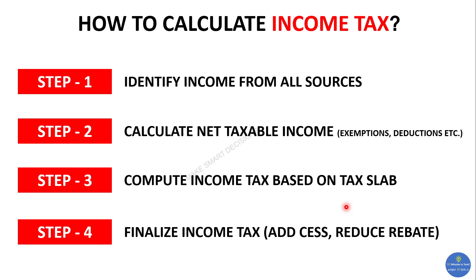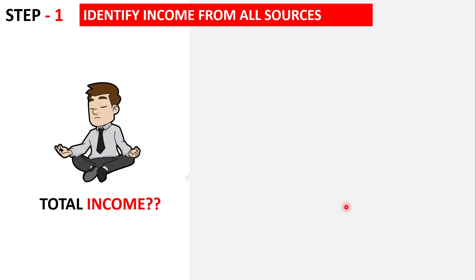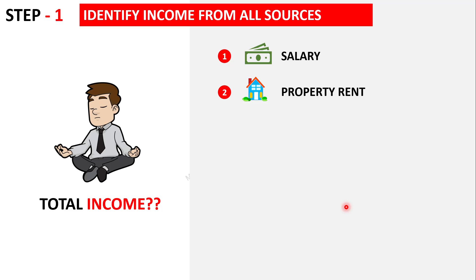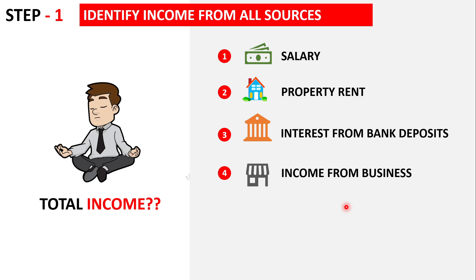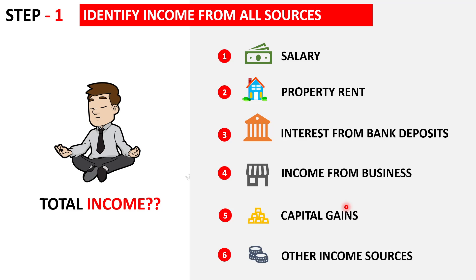Now let's understand each step in detail. Step one — identifying income from all sources. The potential sources of income for an individual are: number one, salary; number two, rent from a property you own; number three, interest from fixed deposits or savings bank accounts; number four, income from business in addition to employment; and number five, capital gains from selling stocks, gold, or property.